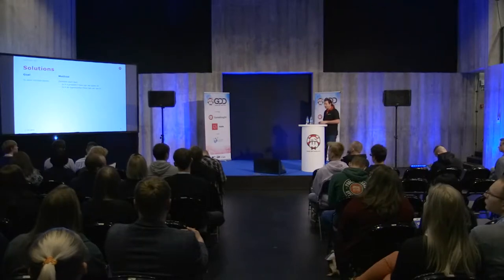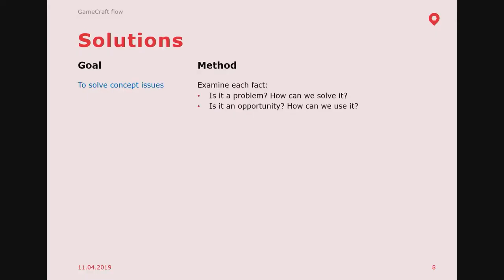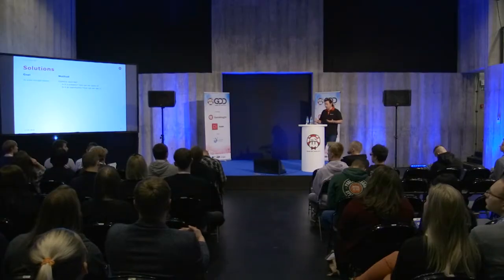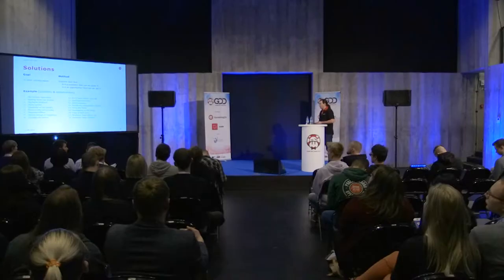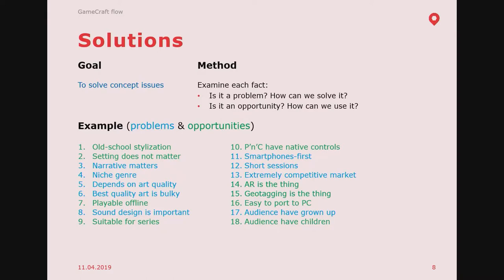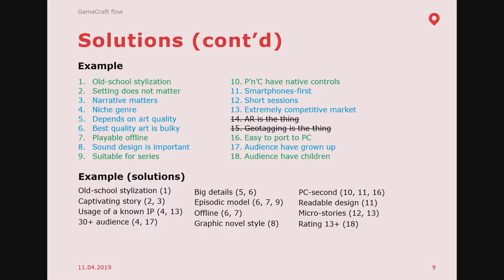Now we have these facts and have to attribute them to two types: either a problem to solve for your game idea, or an opportunity to gain an upper hand. In our case, we got a list of 18 facts distributed roughly equally between problems and opportunities — opportunities are marked green. Here's how we solve them: we take each fact and see how it can be addressed. If it's a problem, what's the solution? If it's an opportunity, how do we use it?